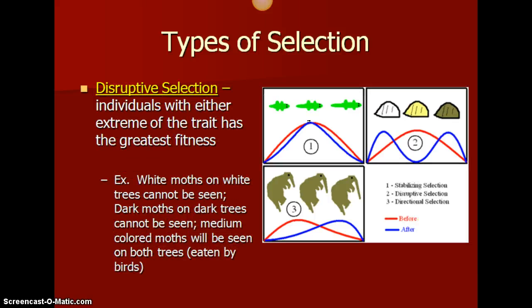Our second type is disruptive selection. In this one, individuals with either extreme of the trait have the best opportunity for survival. For example, white moths on white trees can't be seen so they don't get picked off as easily, and dark moths on dark trees camouflage in well. Medium-colored moths are seen on both trees and are eaten by birds more often, so having that middle-of-the-road trait is not beneficial.